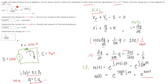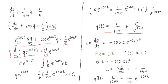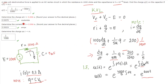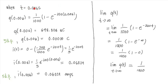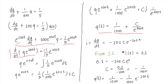We've confirmed the function Q of T is correct. Now let's solve for the charge on the capacitor at time T equals 0.006 seconds by substituting into Q of T. After substituting, we find the charge on the capacitor rounded to 5 decimal places.